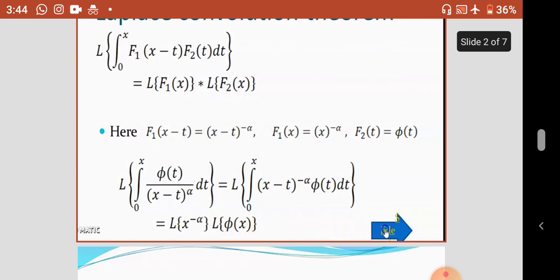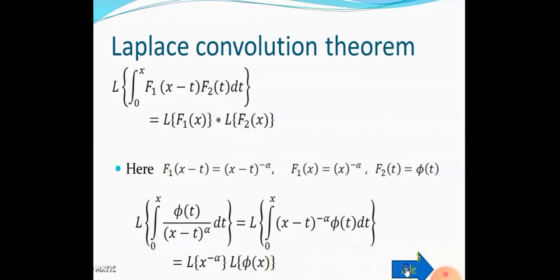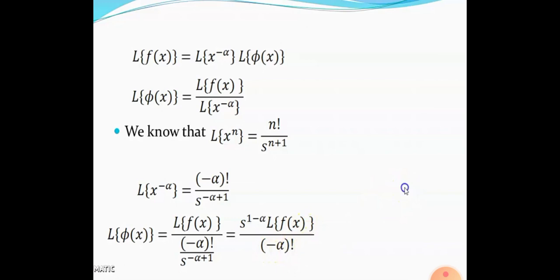Rearranging: the Laplace of the integral from 0 to x of phi(t) divided by (x minus t) raised to alpha, dt, is equal to Laplace of (x minus t) raised to minus alpha into Laplace of phi(x). So we get: Laplace of f(x) equals Laplace of (x raised to minus alpha) into Laplace of phi(x). Therefore, Laplace of phi(x) is equal to Laplace of f(x) divided by Laplace of (x raised to minus alpha).